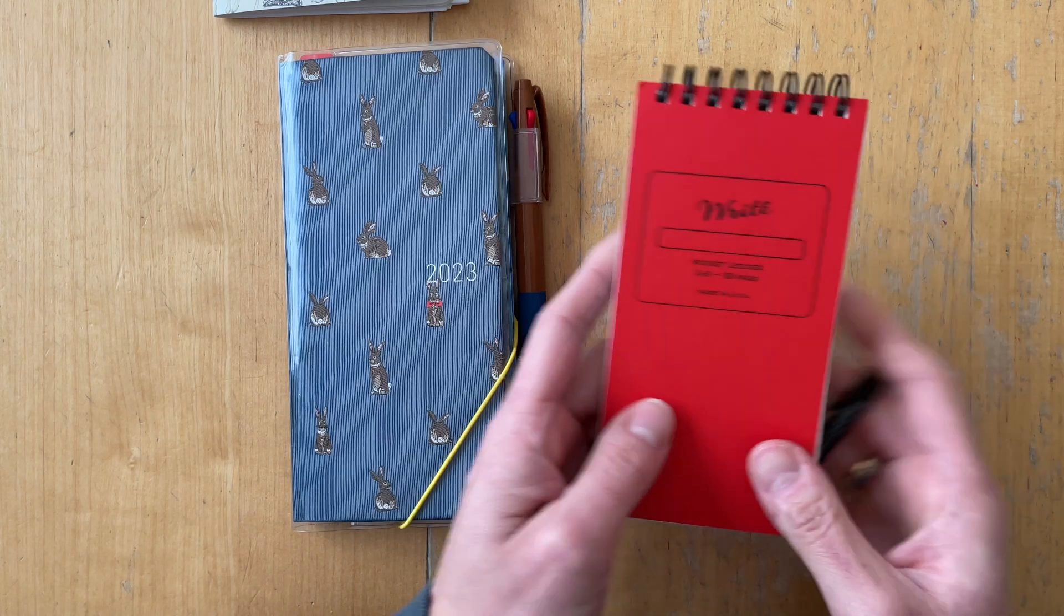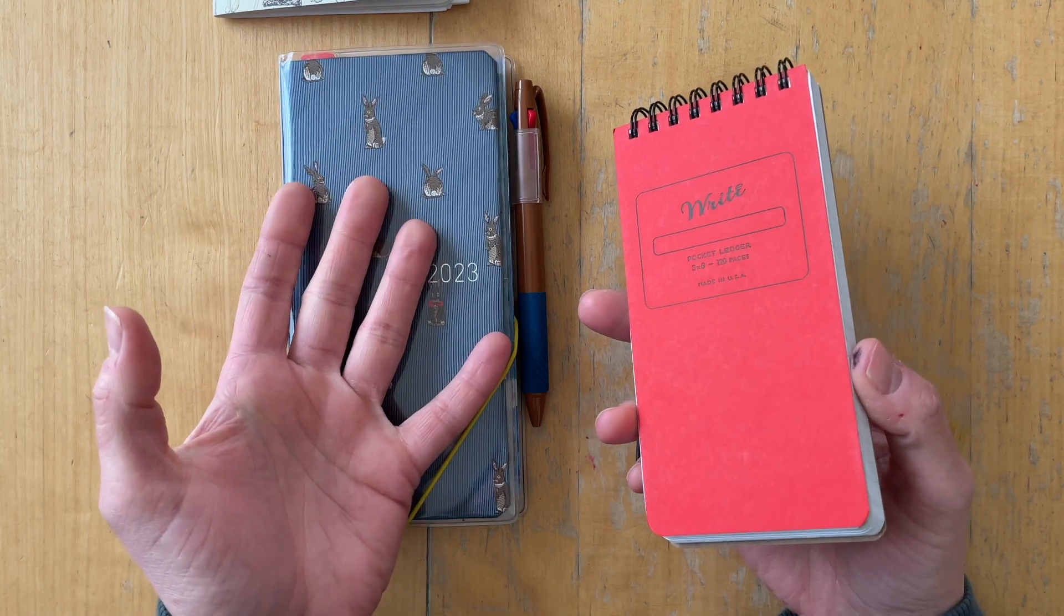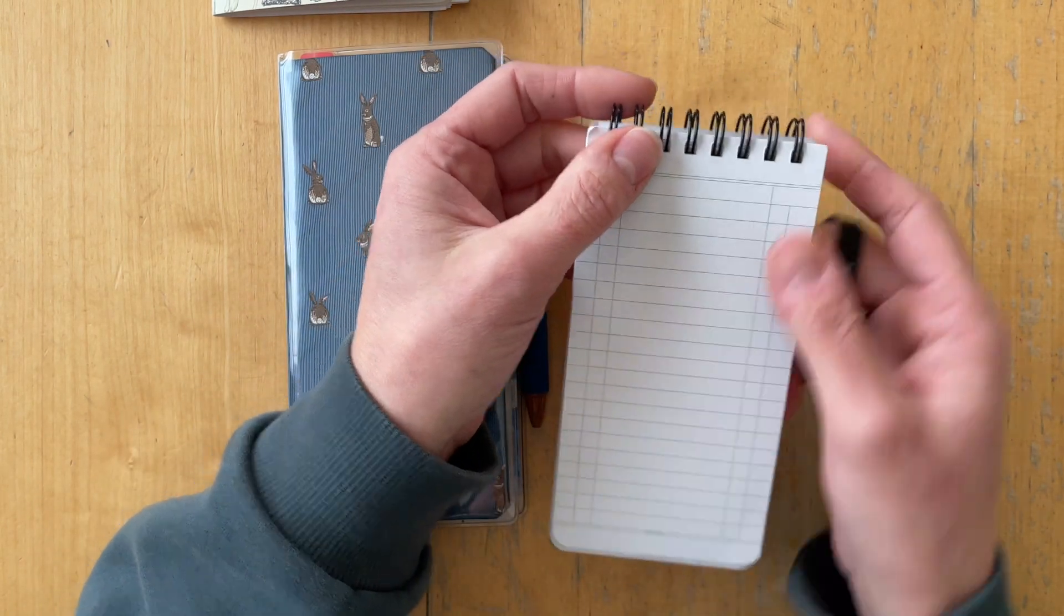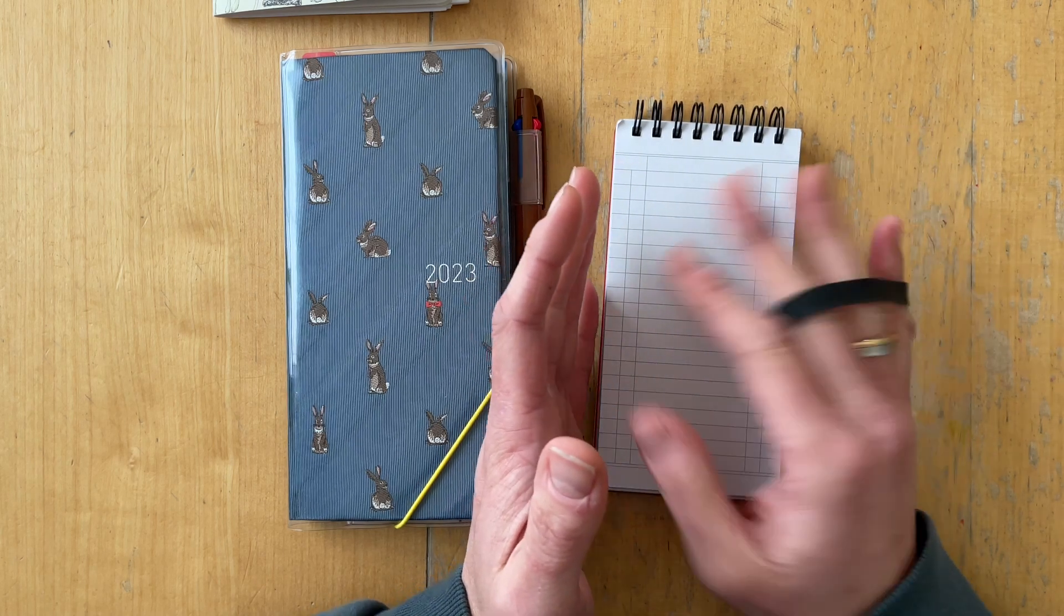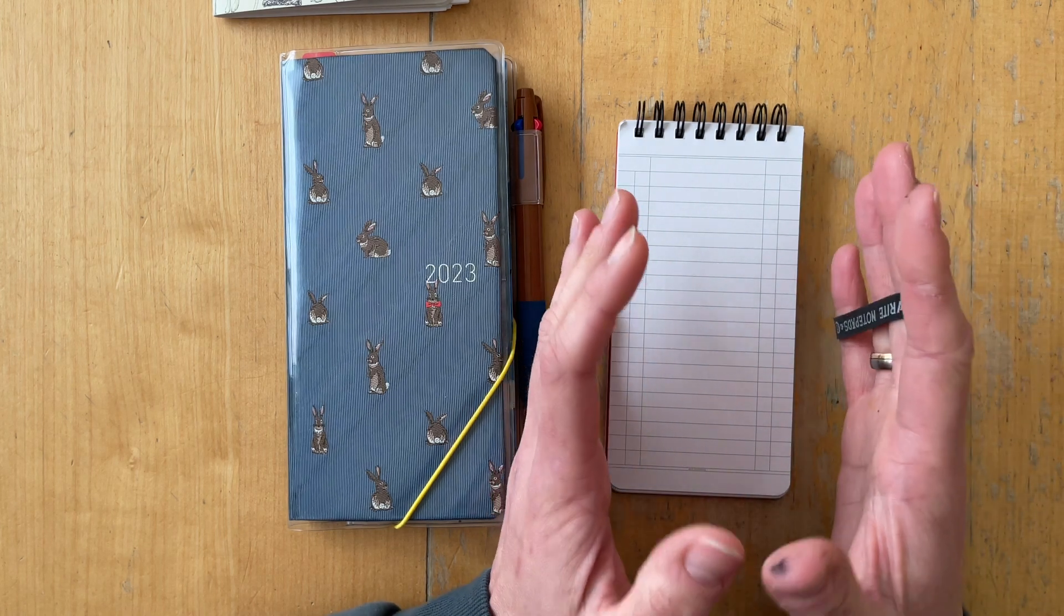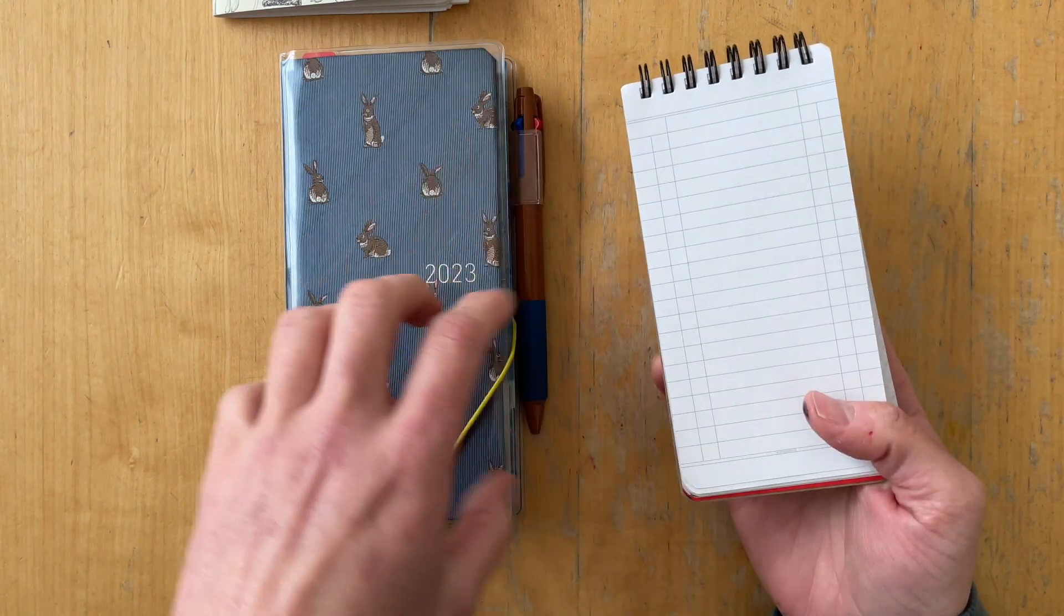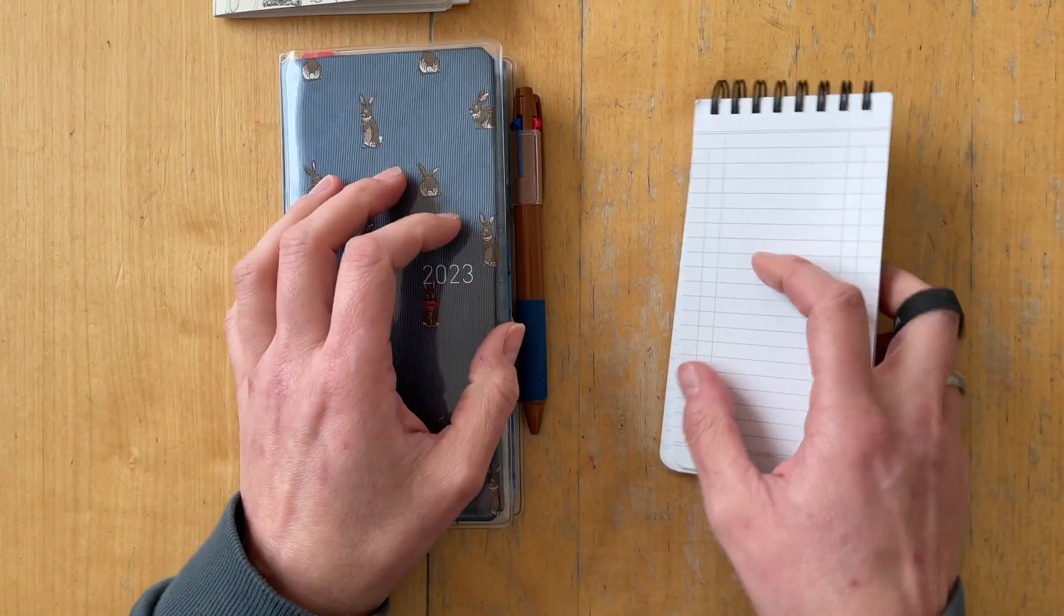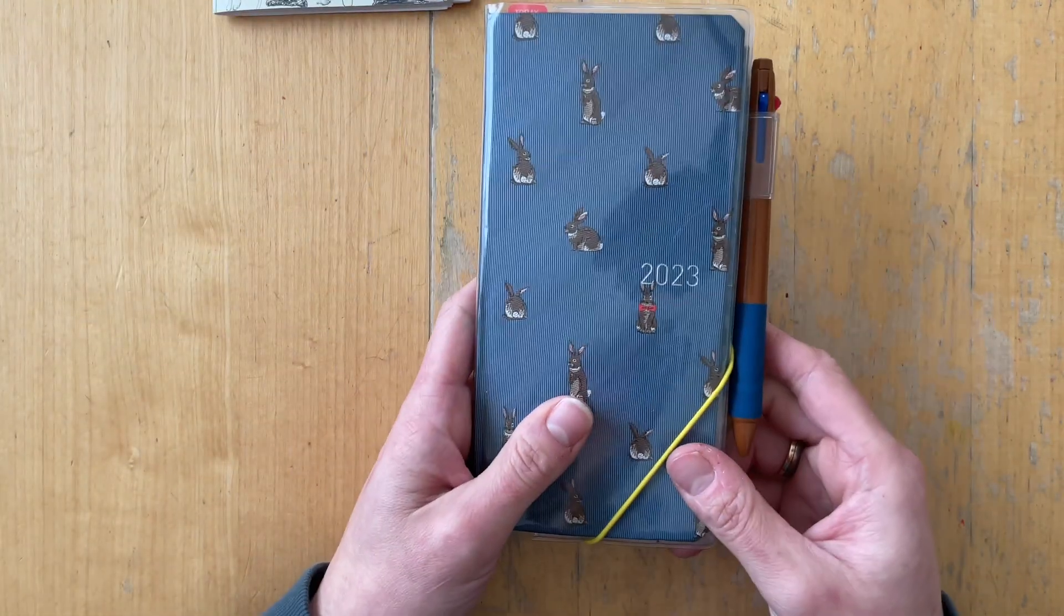Then I have this notepad that functions as a notes section in a planner. I like that it is top spiral, so I can put it everywhere. It is really small. I can take down any kind of notes that I want to, whatever it is that I want to remember, and then later transfer somewhere. It doesn't necessarily need to be my planner.